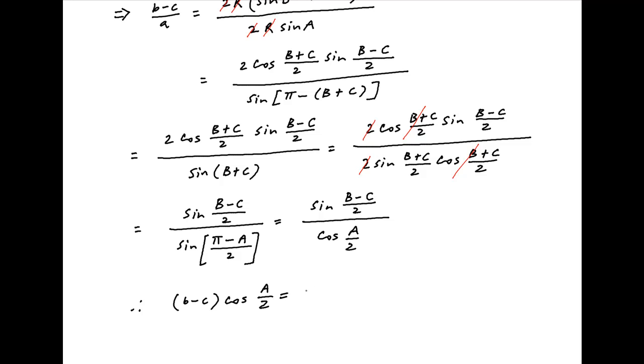Using the above result, we have (b - c) · cos(A/2) = a · sin((B - C)/2), which is the required result.